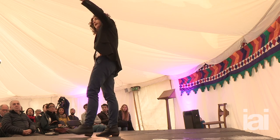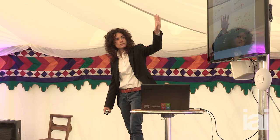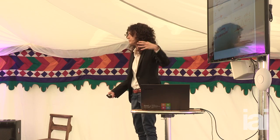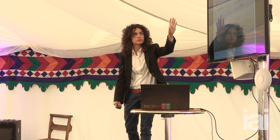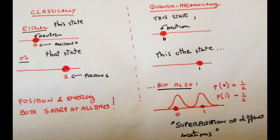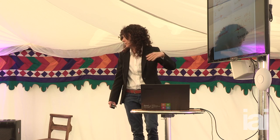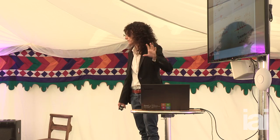So let's take a look. Classically, what we know is that objects have definite properties. For example, if you want to describe a neutron, you can say that a neutron is in a particular position, zero, or it's in a different position, one. These two positions are distinguishable. You can also assign an energy to the neutron, and lots of other properties — spin, etc. — and they're all definite.